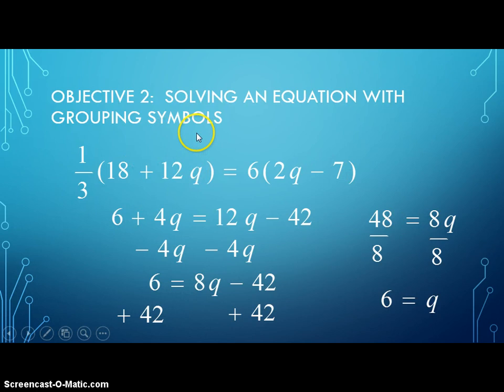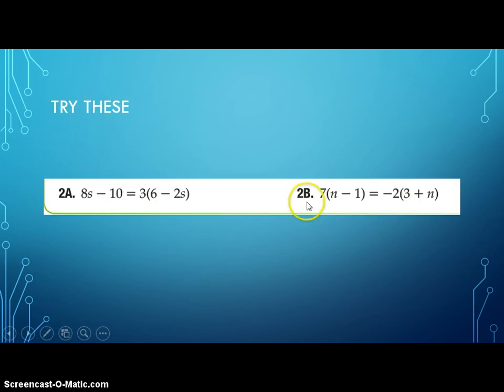Let's take a look at some problems I want you to try. So I want you to try these two problems. Again, distributing. Be careful with 2b. There is a negative, so you're going to distribute negative 2 to the 3 and negative 2 to the positive n, which will change the sign. So keep that in mind. Pause it and get started.